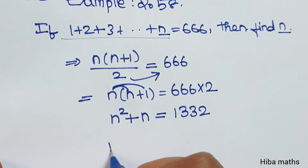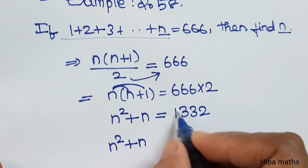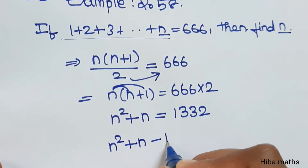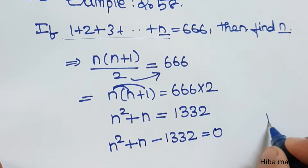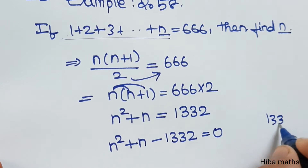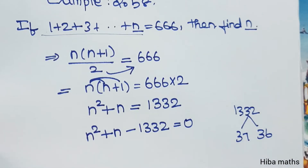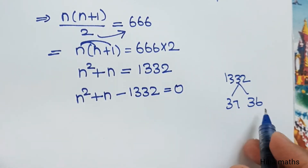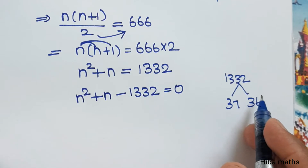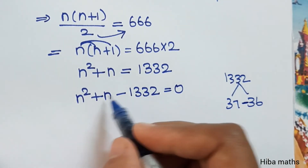Moving 1332 to the other side: n squared plus n minus 1332 is equal to 0. Now split 1332: split 37 into 36, because 37 multiplied by 36 equals 1332, and 37 minus 36 equals 1.